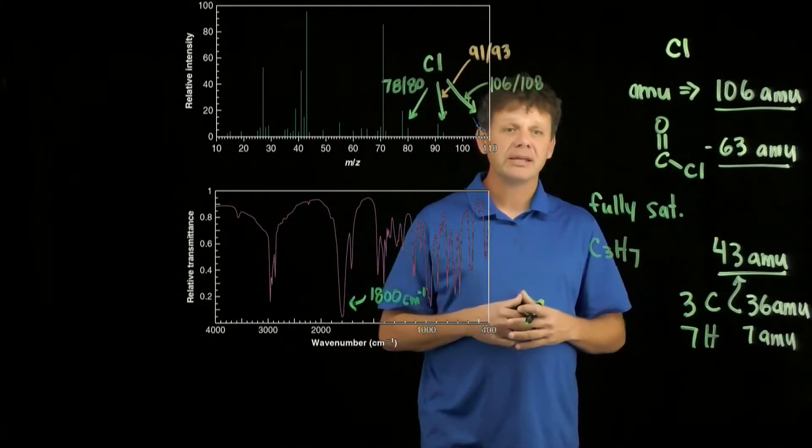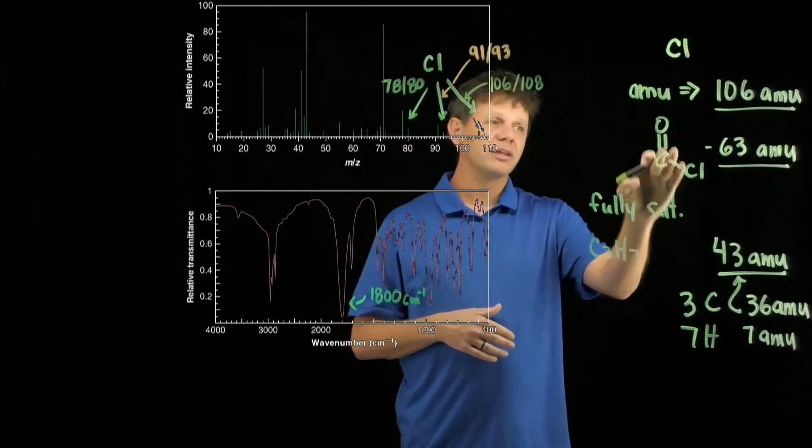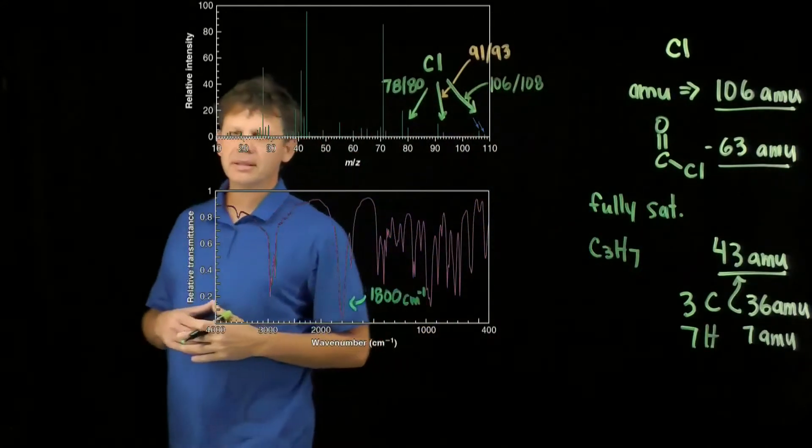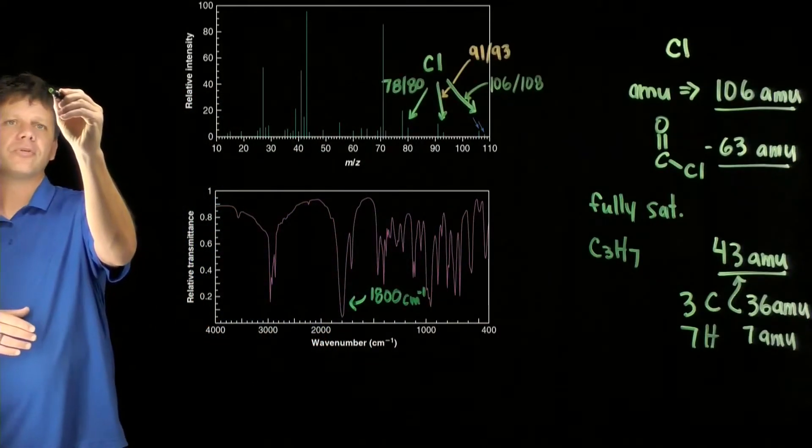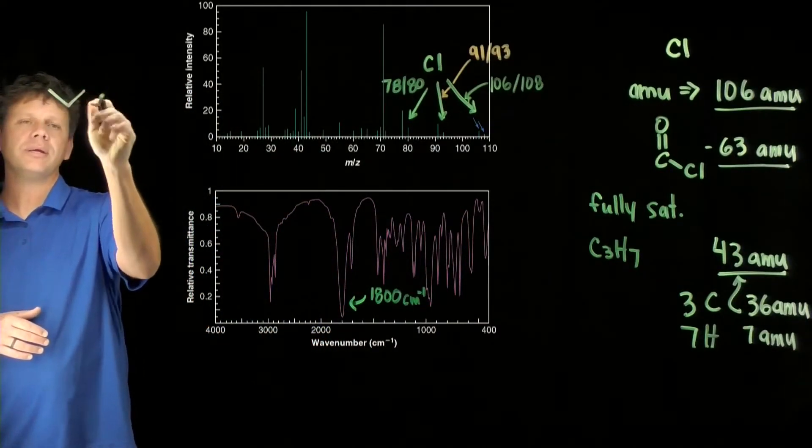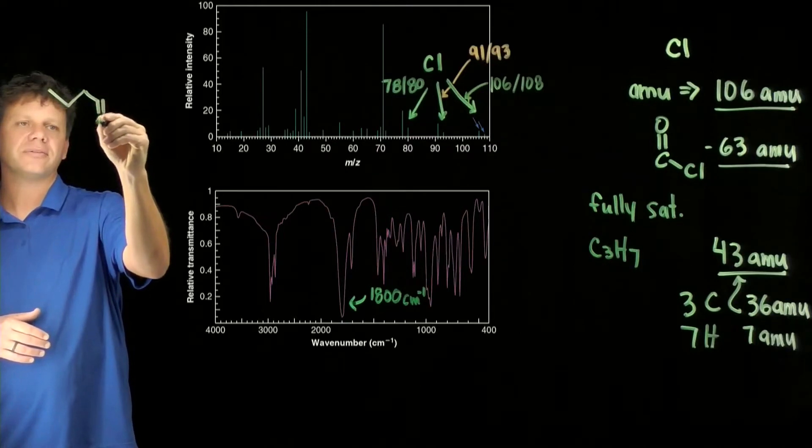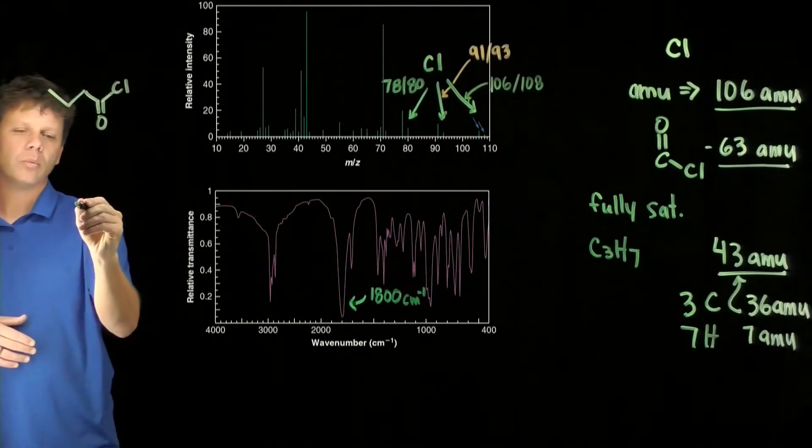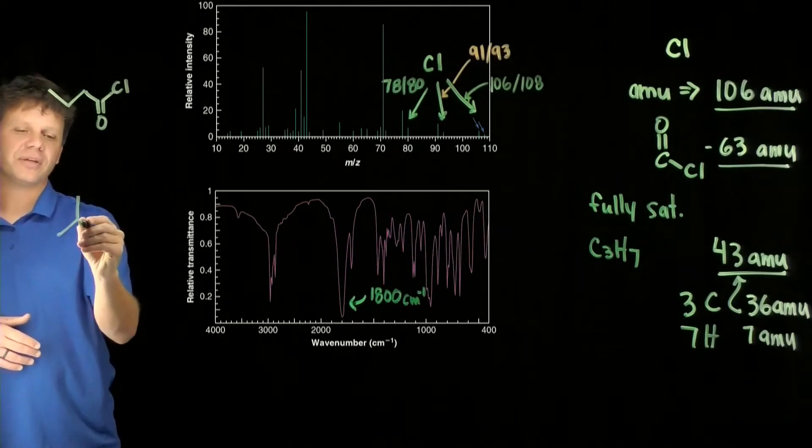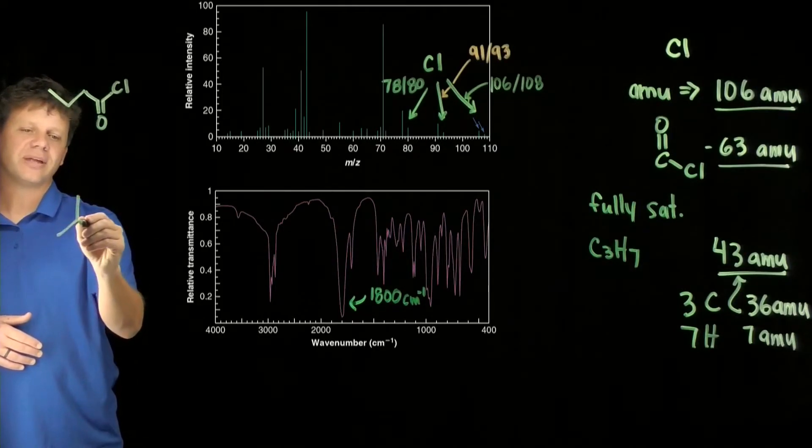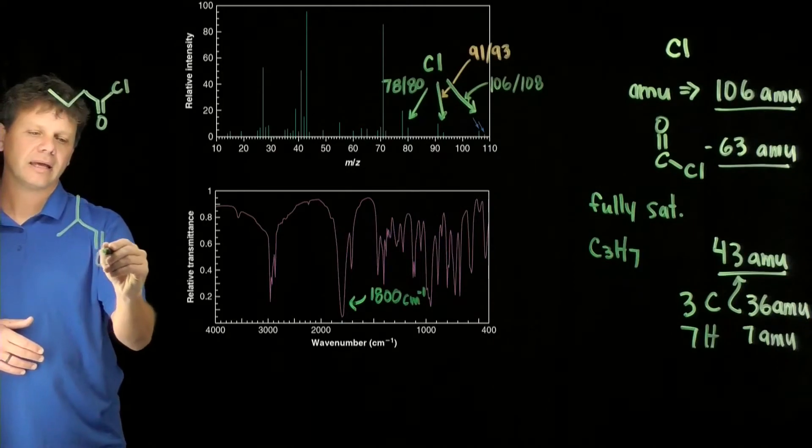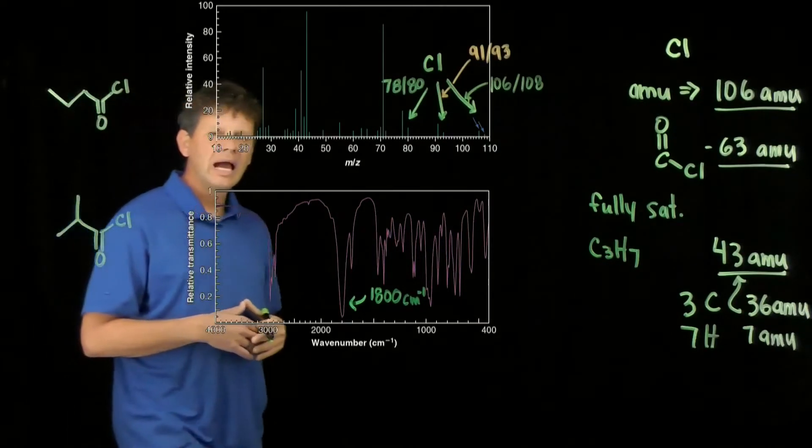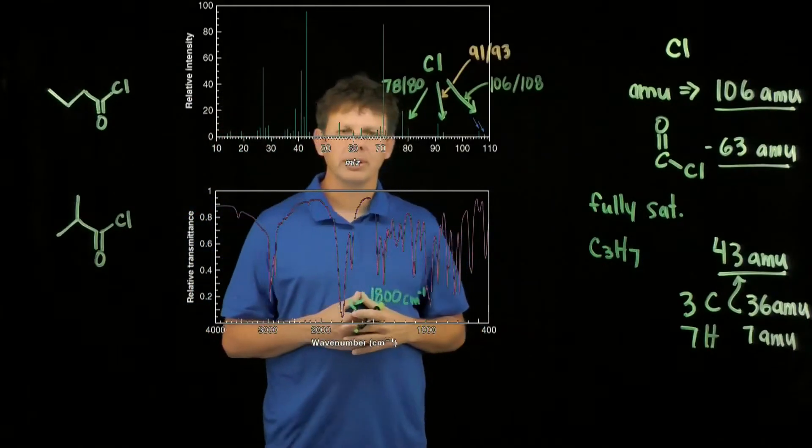Now C3H7 attached to this acid chloride really only gives us two possibilities. We could have it attached straight chain, or we could have it attached as if it's an isopropyl. How will we distinguish between those?